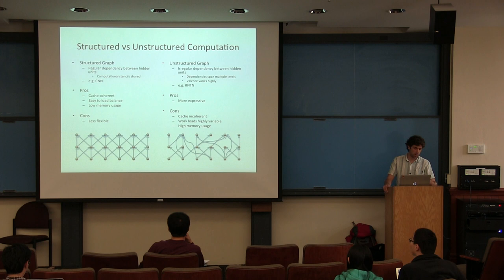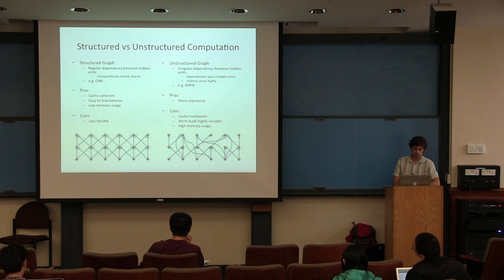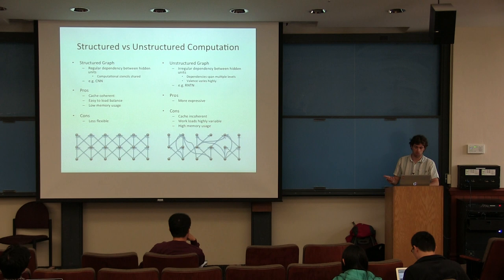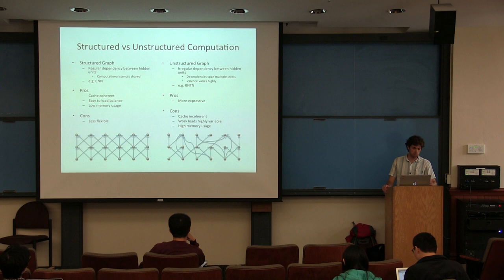By unstructured, I mean we have an irregular dependency between the hidden units — an example of that is an RNTN. These are really expressive, but unfortunately they're very cache incoherent. The data you're working with in memory is all over the place, so when your CPU or GPU is trying to pull data into the registers to perform math, that operation can take a lot of time. You'll have a lot of cache misses. The workloads at each hidden unit can be highly variable, making parallel computation partitioning difficult, and you have higher memory usage.